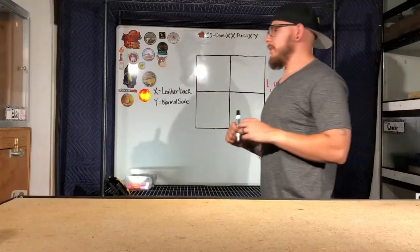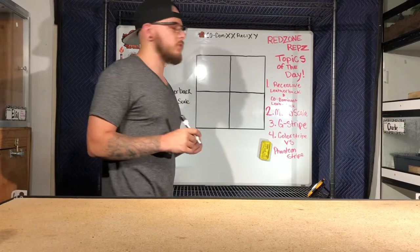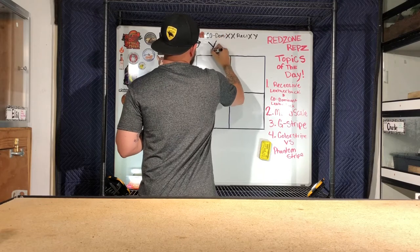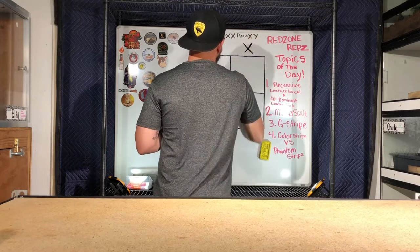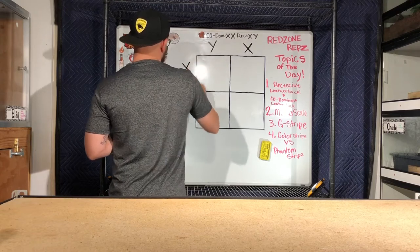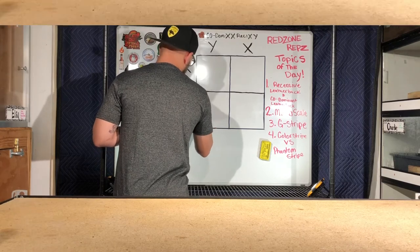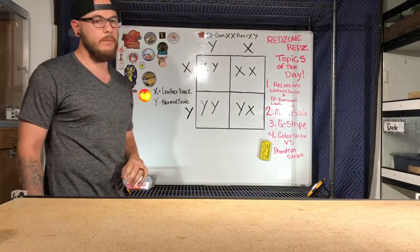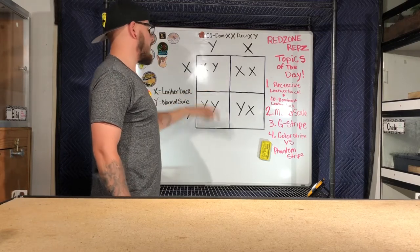Now for part two: producing micro scales. To produce a micro scale, you need a normal scale dragon that is het for leatherback — meaning it carries the recessive trait for leatherback — paired with a leatherback that carries the recessive trait for normal scale. That pairing produces the micro scale. The other three offspring would technically be het for micro scale: two being normal het for micro scale, and one being a leatherback het for micro scale.